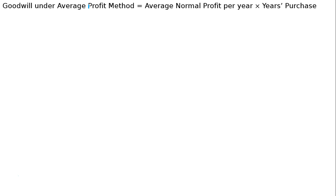The question is: Bhaskar and Pillai are partners sharing profits and losses in the ratio of 3 to 2. We have 3 years of profit, 2 years of purchase, and we need to find the average normal profit.